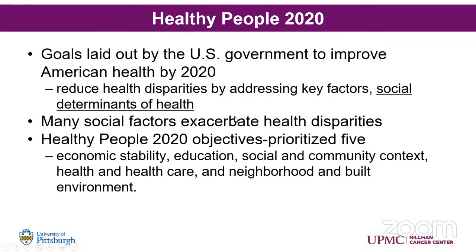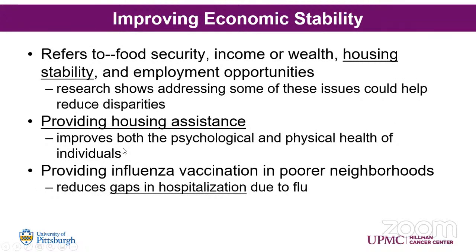With Healthy People 2020, these were goals laid out by the US government to improve American health and reduce health disparities. One goal was to improve economic stability by 2020 — referring to food security, income or wealth, housing stability, and employment opportunities. This includes providing housing assistance, which improves both psychological and physical health, and providing influenza vaccination in poorer neighborhoods to reduce gaps in hospitalizations. We do have things going on across the state that address many of these, but it's not equal in all areas.